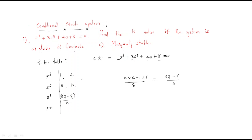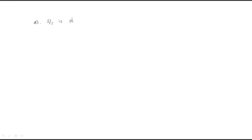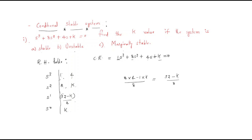So the first column of the Routh-Hurwitz table contains: 1, 8, (32 − k)/8, and k. For the first condition — if the system is stable — all elements in the first column must be positive. That means 1 > 0 (always true), 8 > 0 (always true), (32 − k)/8 > 0, and k > 0.